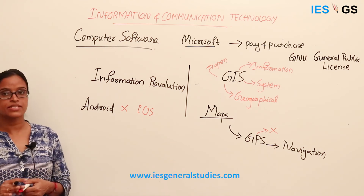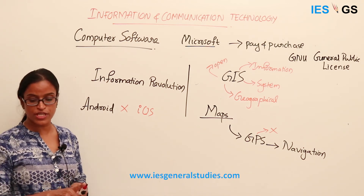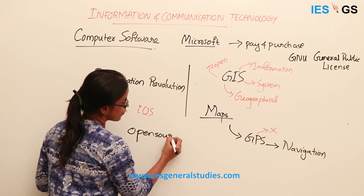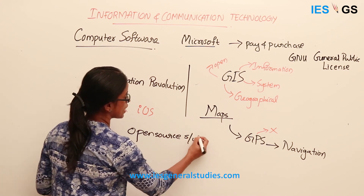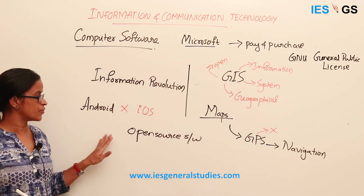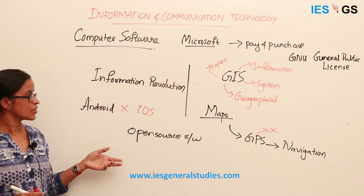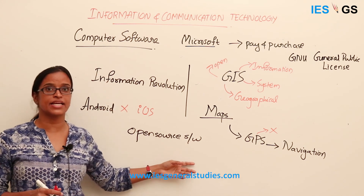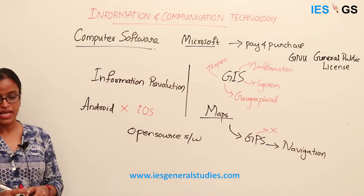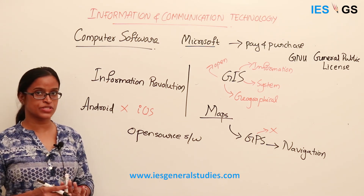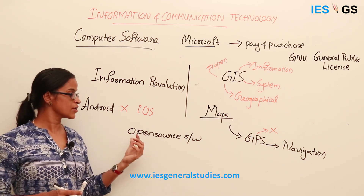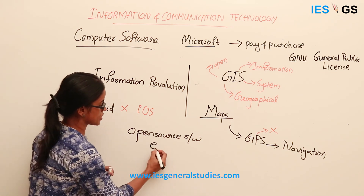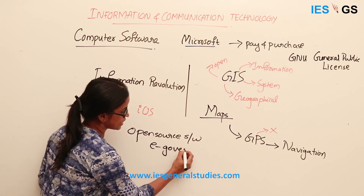Sometimes government institutions also support open source software. Instead of licensed software, there may be government instructions to go for open source so they don't have to pay fees and can customize it for their purposes. Recently, the Indian government also took steps to popularize the use of open source software wherever available for e-governance purposes and the Digital India program.